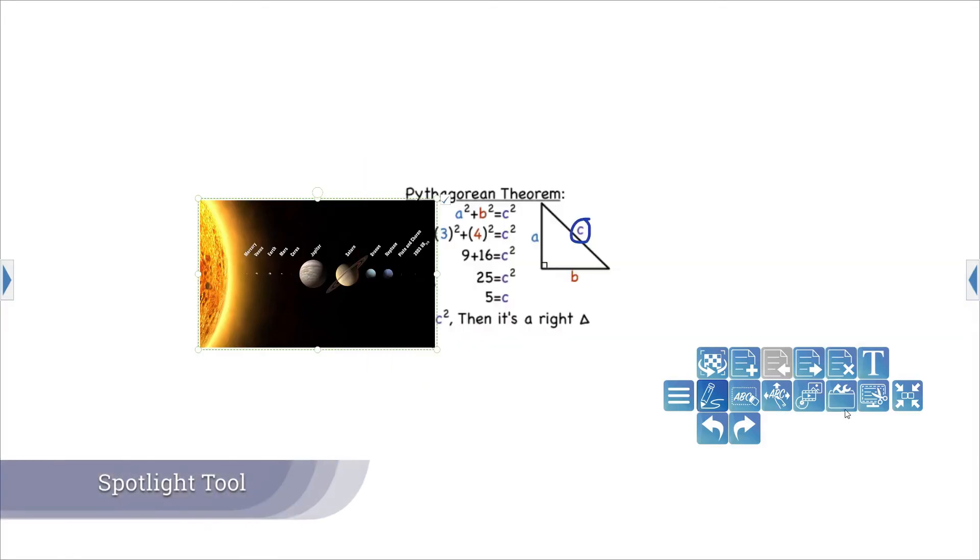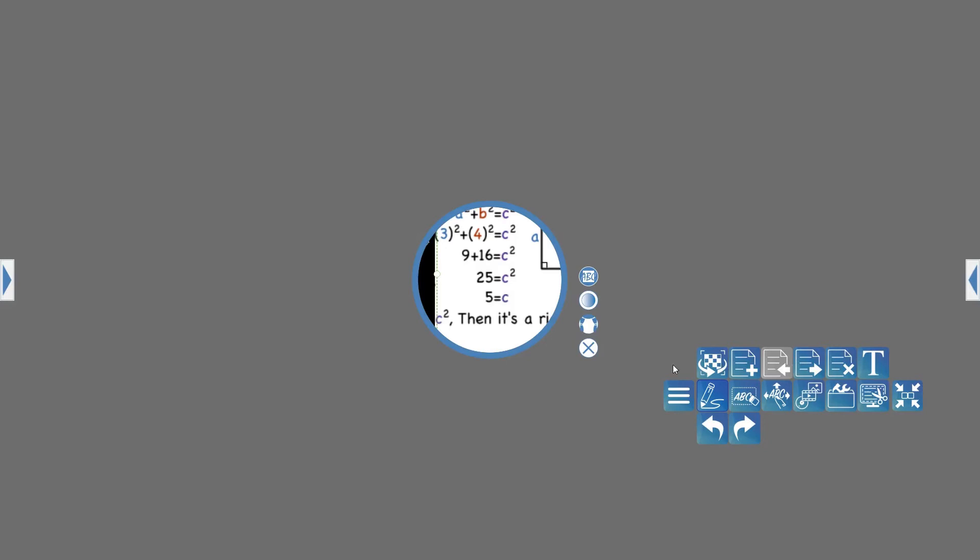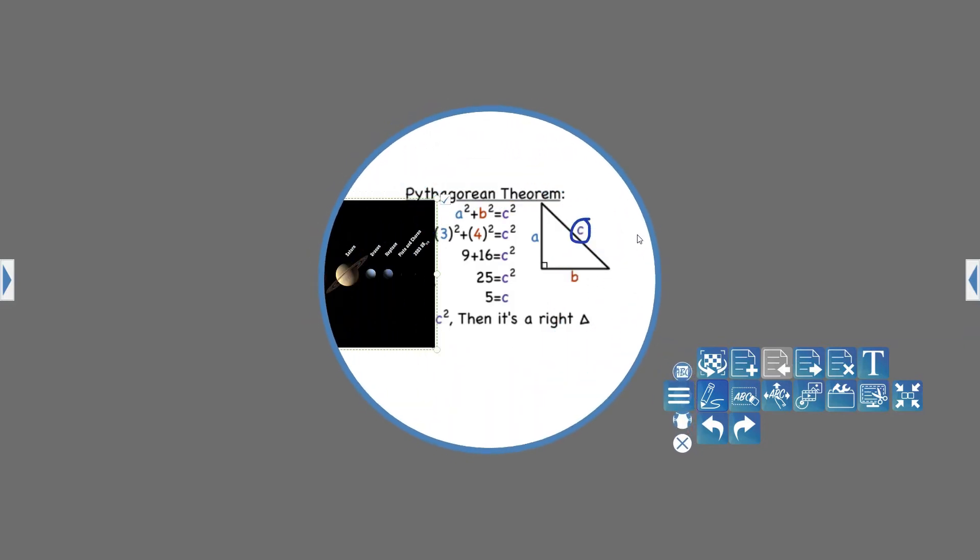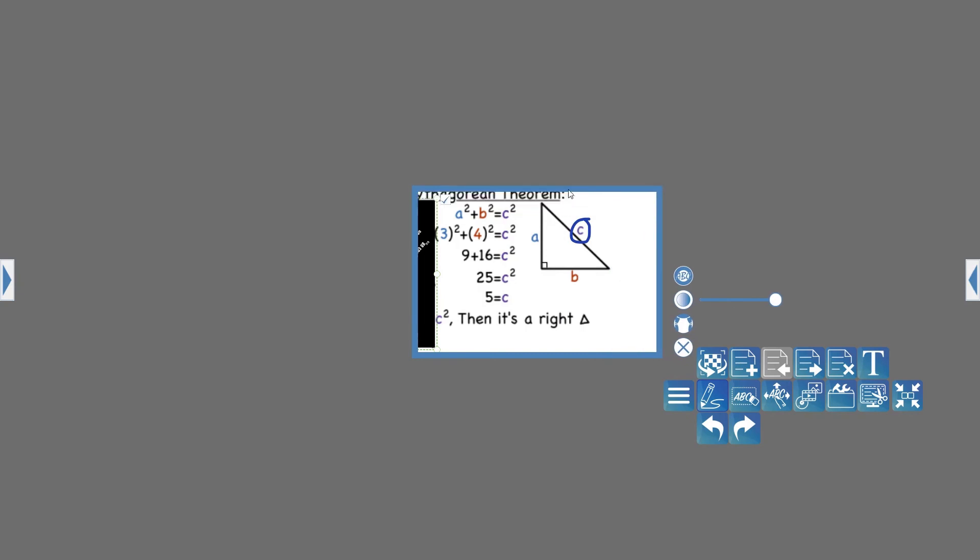And lastly, Spotlight hides everything on your screen except for a small section acting as the spotlight. You can resize and adjust how large the Spotlight section is. You can also adjust how much the rest of the screen is covered. And you can change the shape back and forth from a circle to a square.